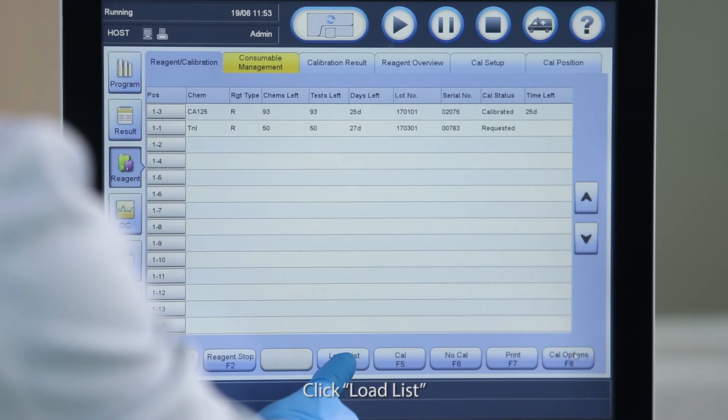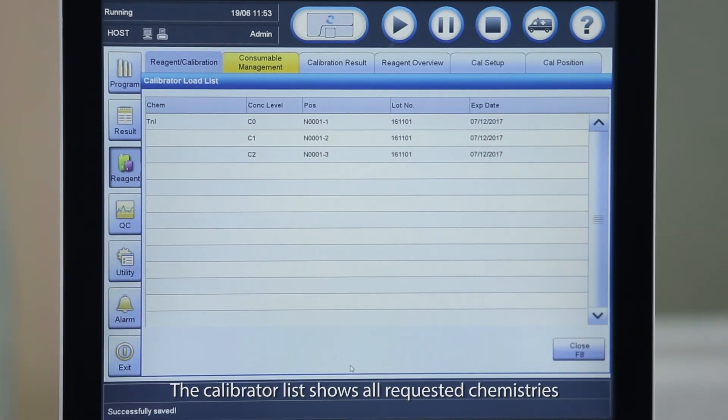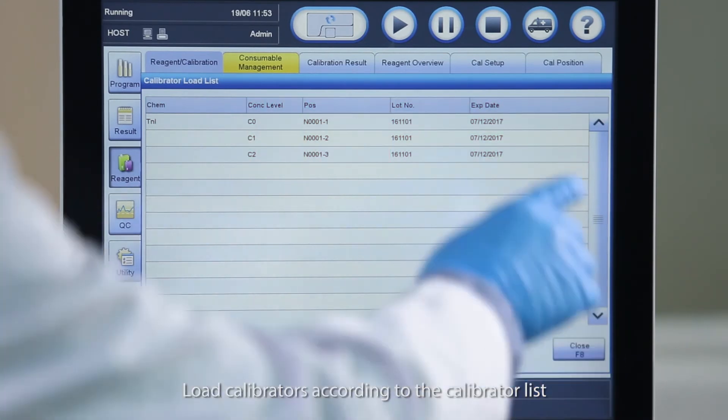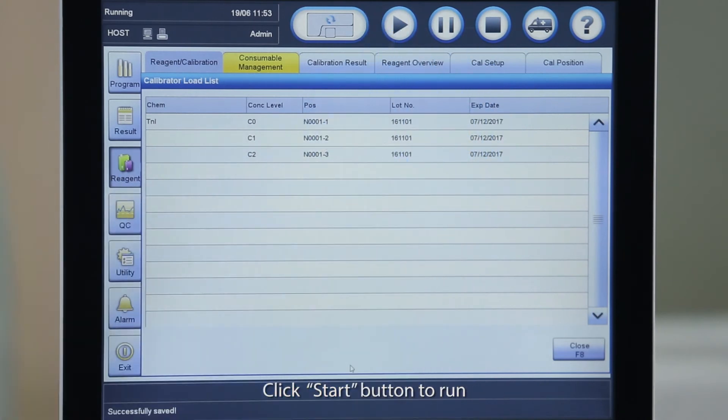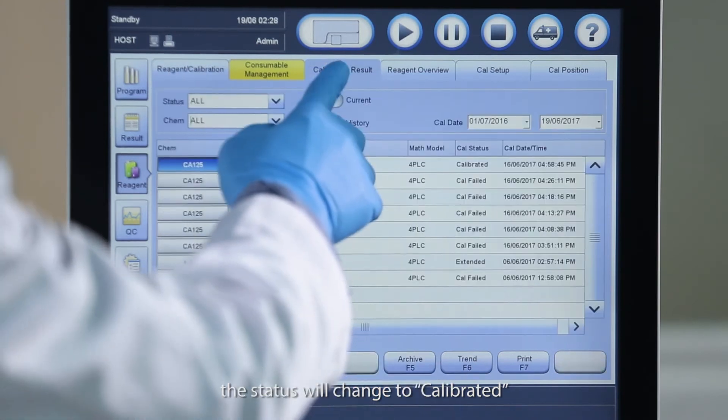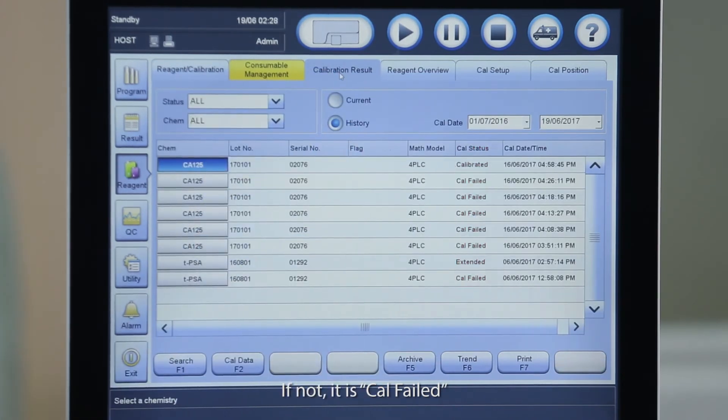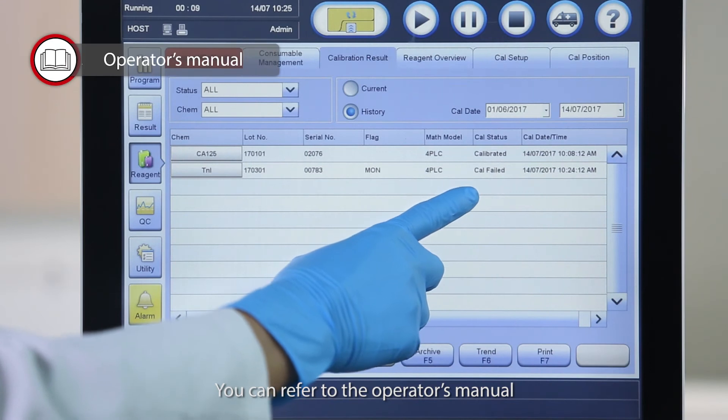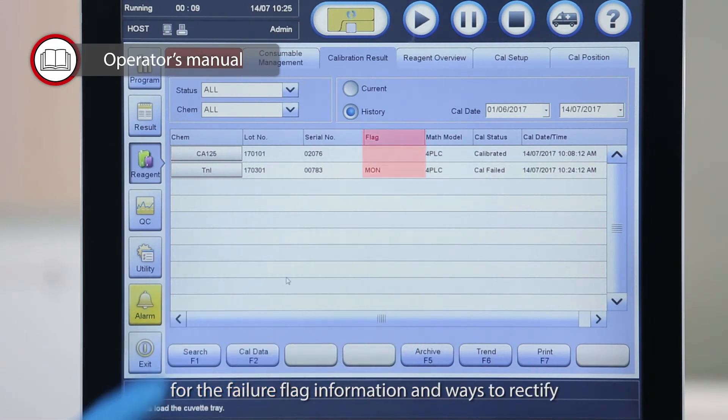Click Load List. The calibrator list shows all requested chemistries as well as calibrators information. Load calibrators according to the calibrator list. Click Start button to run. If the calibration is successful, the status will change to Calibrated. If not, it is Cal failed. You can refer to the operator's manual for the failure flag information and ways to rectify.